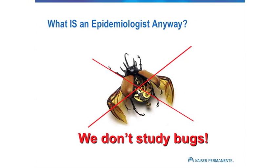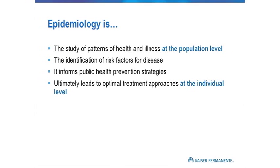What is an epidemiologist anyway? We don't study bugs — we're not entomologists, even though the words are similar. We study patterns of health and illness in populations. This is a population-based discipline, and the goal is to identify risk factors for disease and to inform public health strategies for preventing disease, and ultimately to come up with treatment approaches. We're taking this population-based approach, studying large numbers of people, trying to look at associations and patterns between exposures and outcomes — the who, what, why — that can ultimately be used to address issues in the clinic at the individual level.